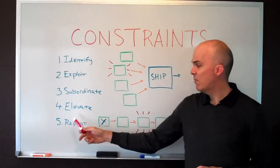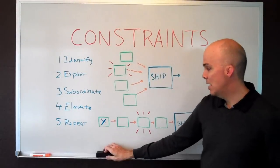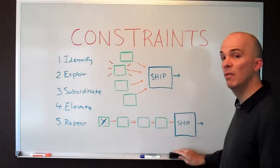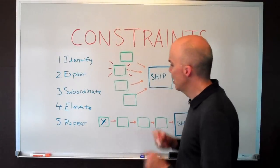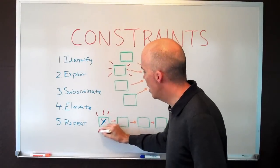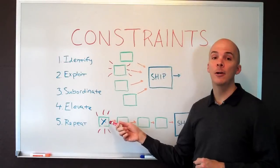And then finally, step five is repeat. Don't let inertia set in, because the idea of constraints is that there will always be a constraint. So if you've removed it one place, by definition of theory, it means it's cropped up somewhere else and now your time and attention would be best focused on that area.